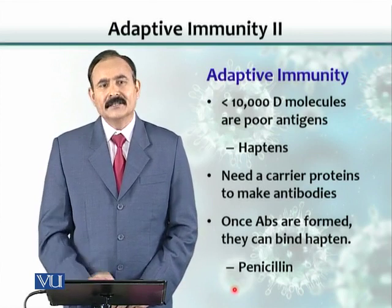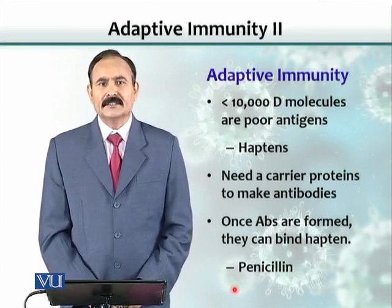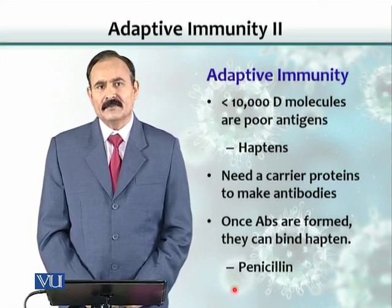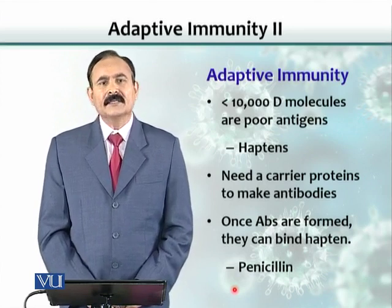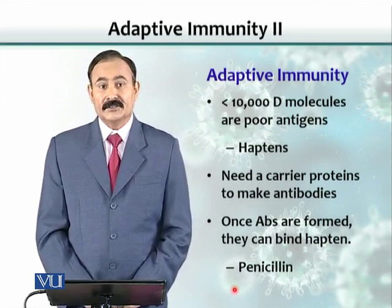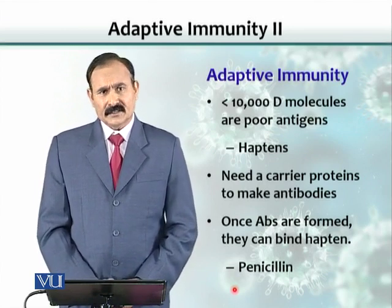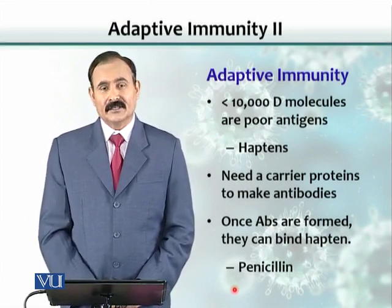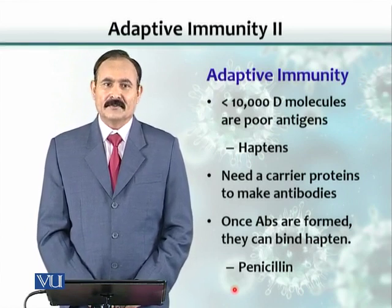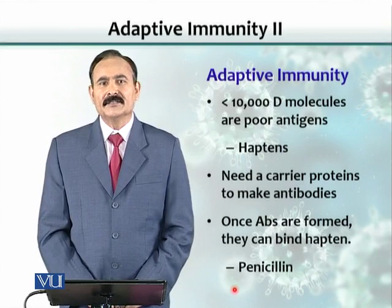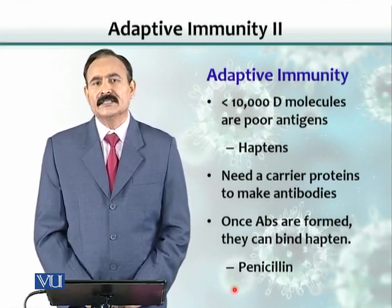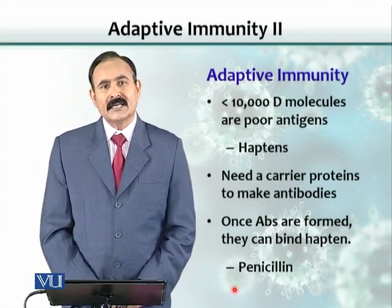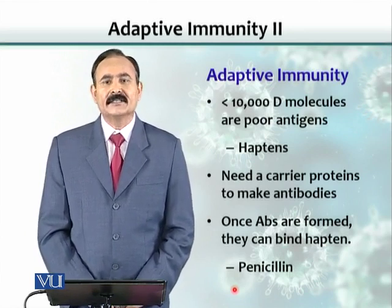Penicillin is a very good example of such a molecule. When a patient takes penicillin as an antibiotic during an infection, some people get allergic and have an antibody response generated against penicillin. The penicillin molecule is a very small structure, but it attaches to body proteins naturally and can induce antibody production. Those antibodies can later bind to penicillin, and because penicillin is attached to various cells — with those proteins acting as carriers — those cells get destroyed by the antibodies, resulting in allergy.